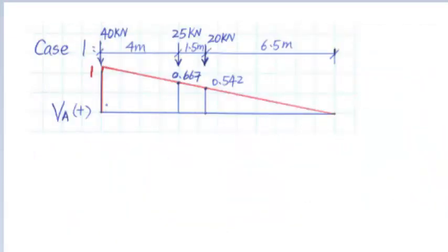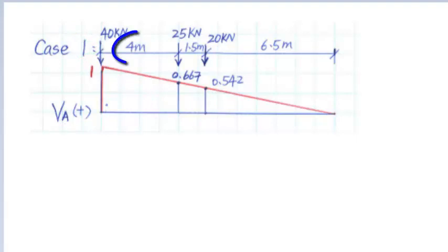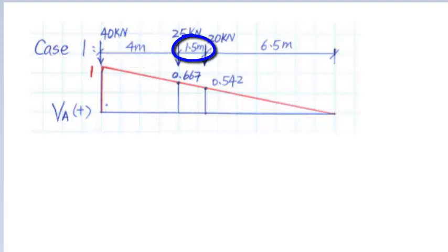First, we will check case 1: maximum shear at A. We need to draw the influence lines of the shear force at A and locate the first axle load of 40 kN at point A, and locate the second axle load of 25 kN and third axle load of 20 kN on the influence line of VA according to the axle spacing. On the influence line, we get the values under each axle load according to the geometry of similar triangles. The value at the 40 kN load is 1, the value at the 25 kN load is 0.667, and the value at the 20 kN load is 0.542.